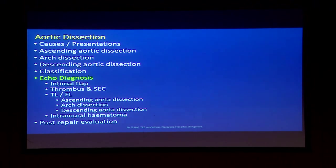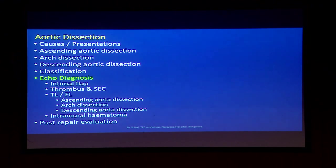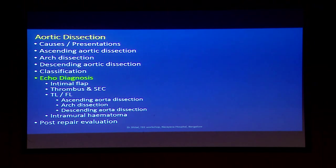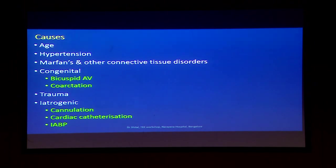Moving to another pathology: dissections. The echocardiographic diagnosis looks for: intimal flap, thrombus and spontaneous echo contrast, true lumen and false lumen movements, and some repairs.